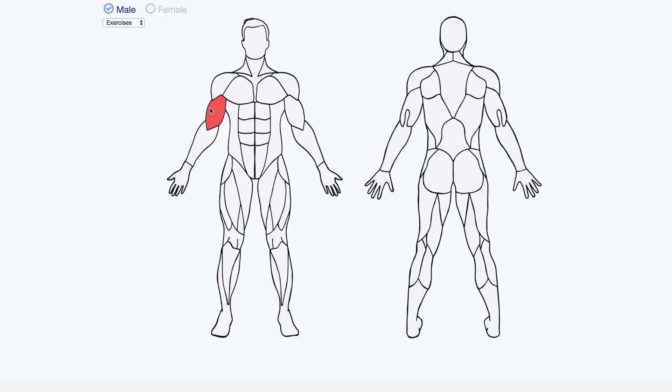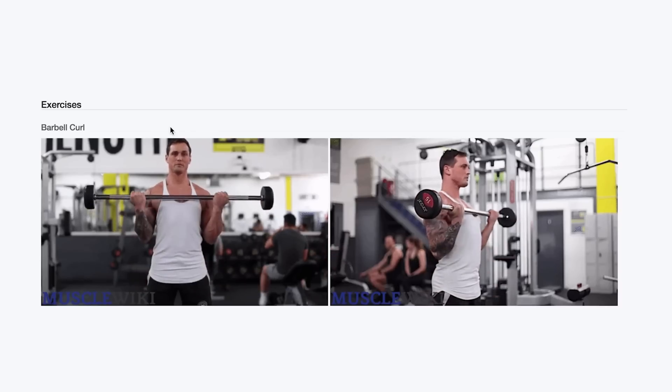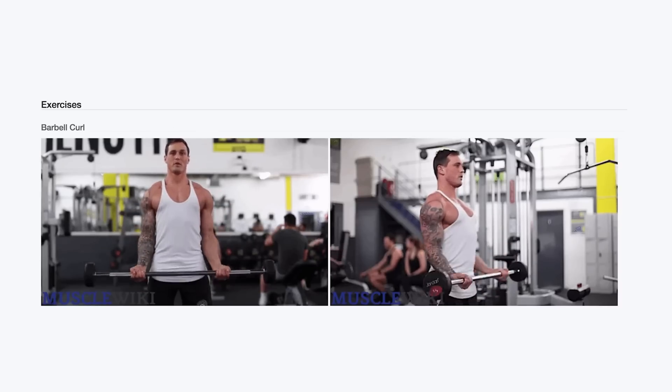As promised last week, Muscle Wiki shows you the muscle groups in the front and back of your body. Choose one and it will give you exercises to do that work those muscles. You can tell I use that website a lot because of my amazing muscles.